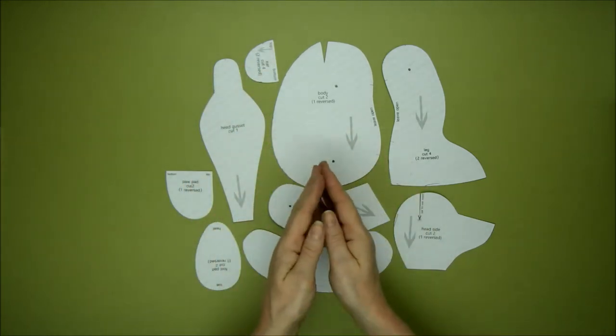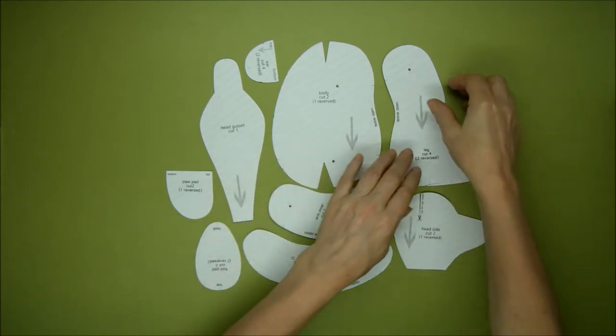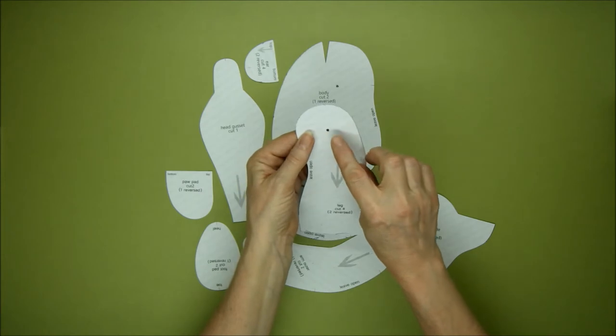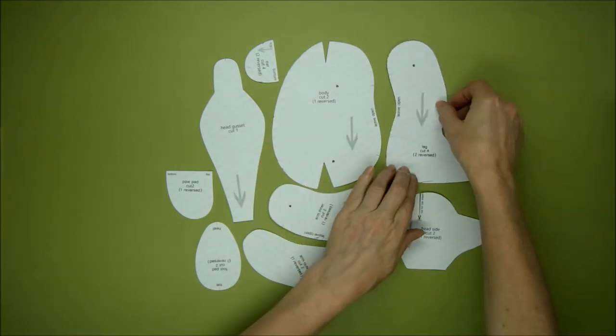On the body you'll see these darts which we'll use for shaping the body by sewing them together. And on the legs and inner arms you'll see these dots which we're going to make into holes because we want to be able to mark through those with pen.